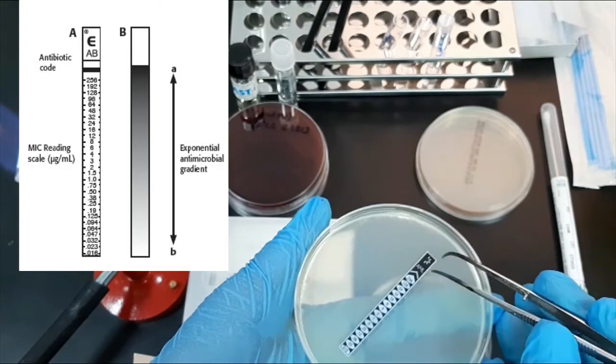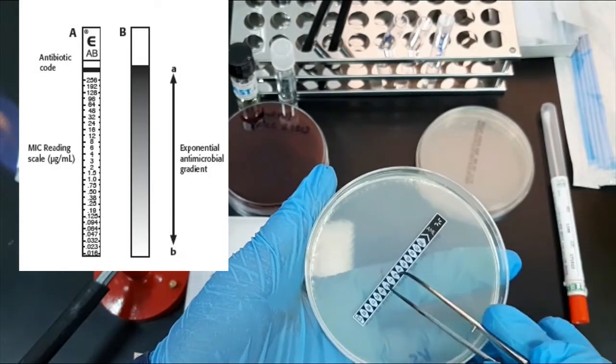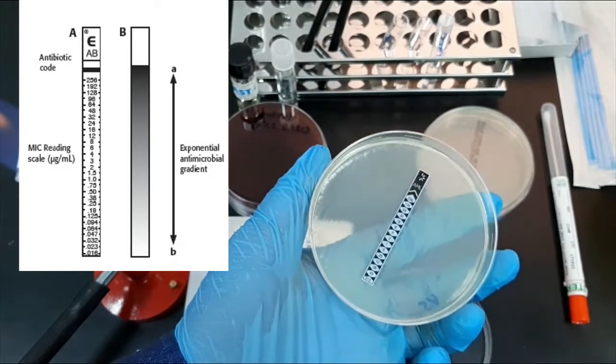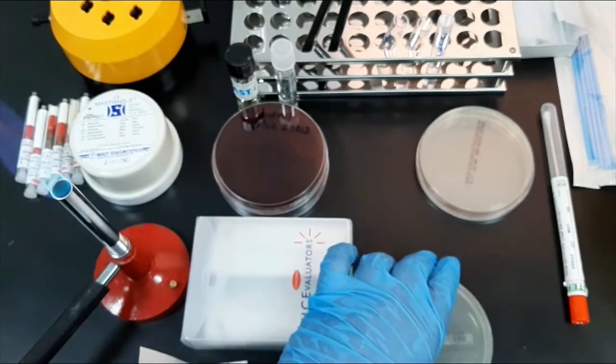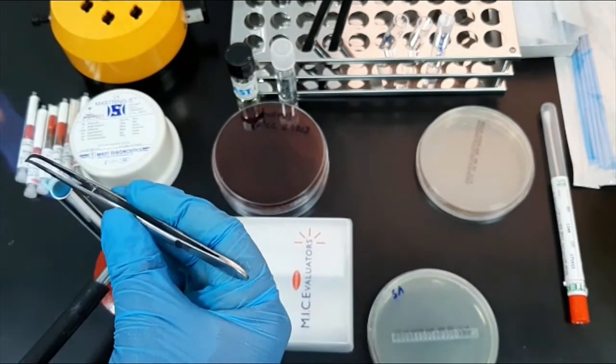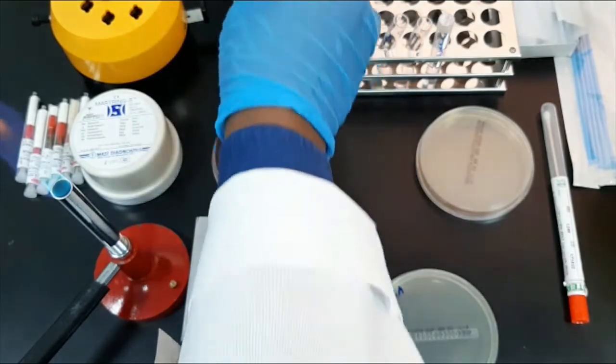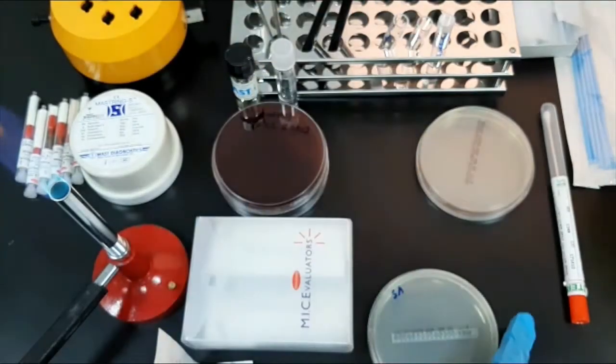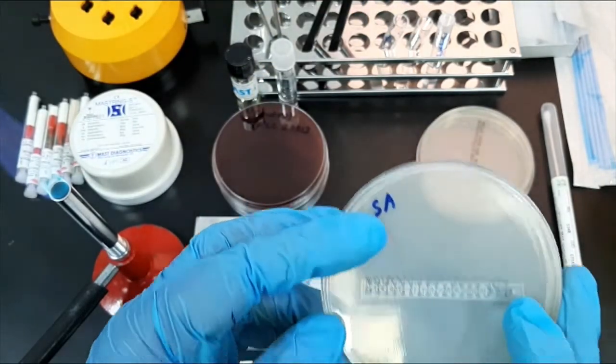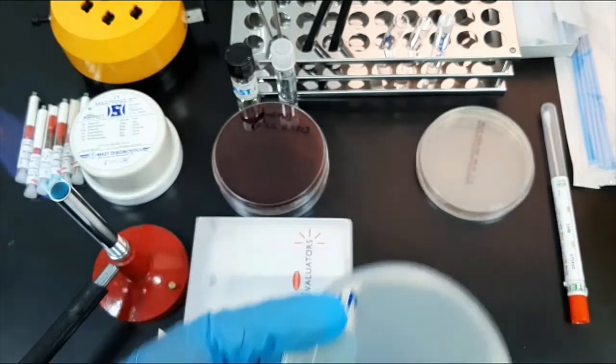When the strip is applied onto an inoculated agar plate, there is an immediate release of antibiotic to the agar surface. The strip should be lightly pressed down to ensure contact with the agar. Then incubate the plate at 37 degrees Celsius overnight in an inverted position.